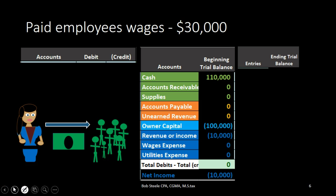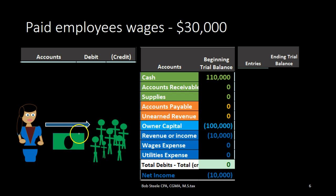In this lecture we're going to record the transaction of paying employees wages with cash. Here's the employer paying the wages to the employees with cash. We're going to record the transaction on the left hand side and then post that in a shorthand fashion to the trial balance, in order to see the reaction to the other accounts that will be impacted, as well as to the accounting equation.